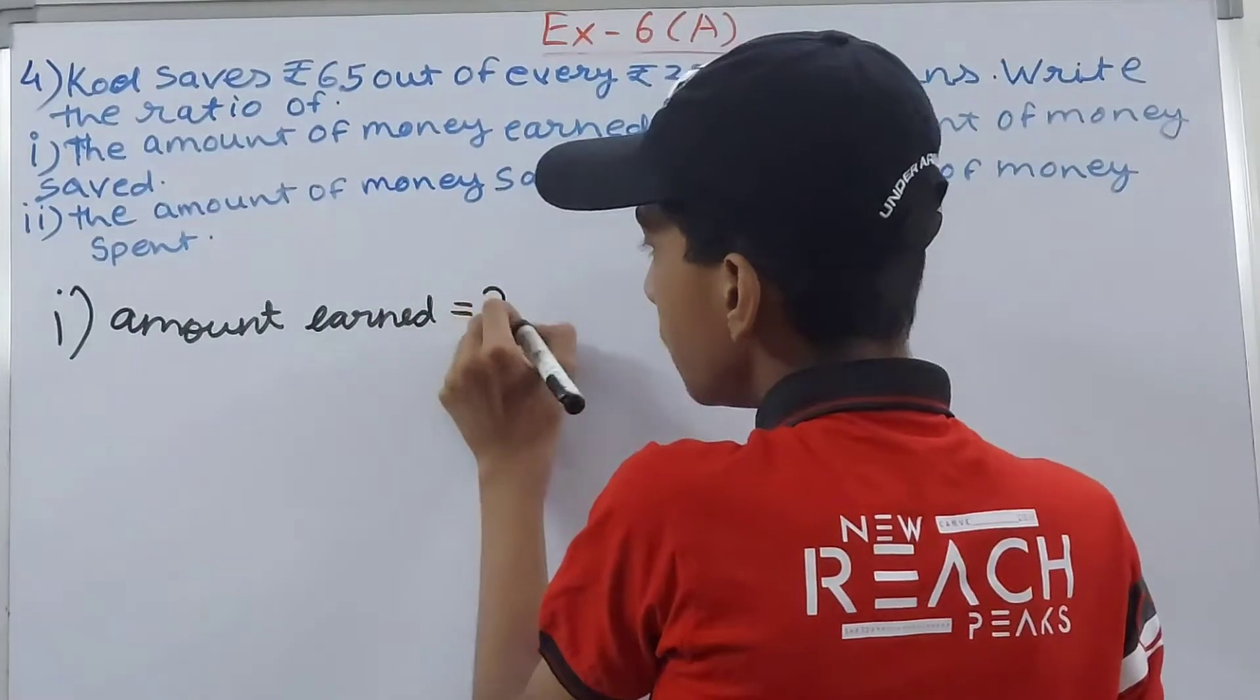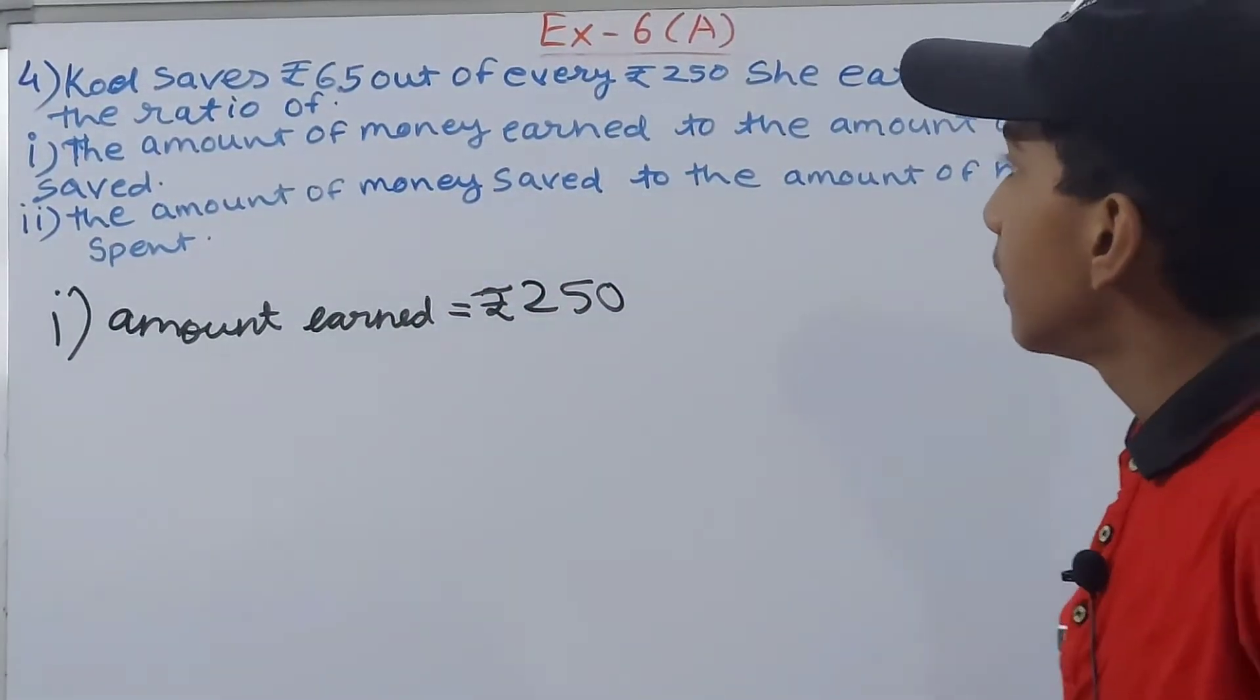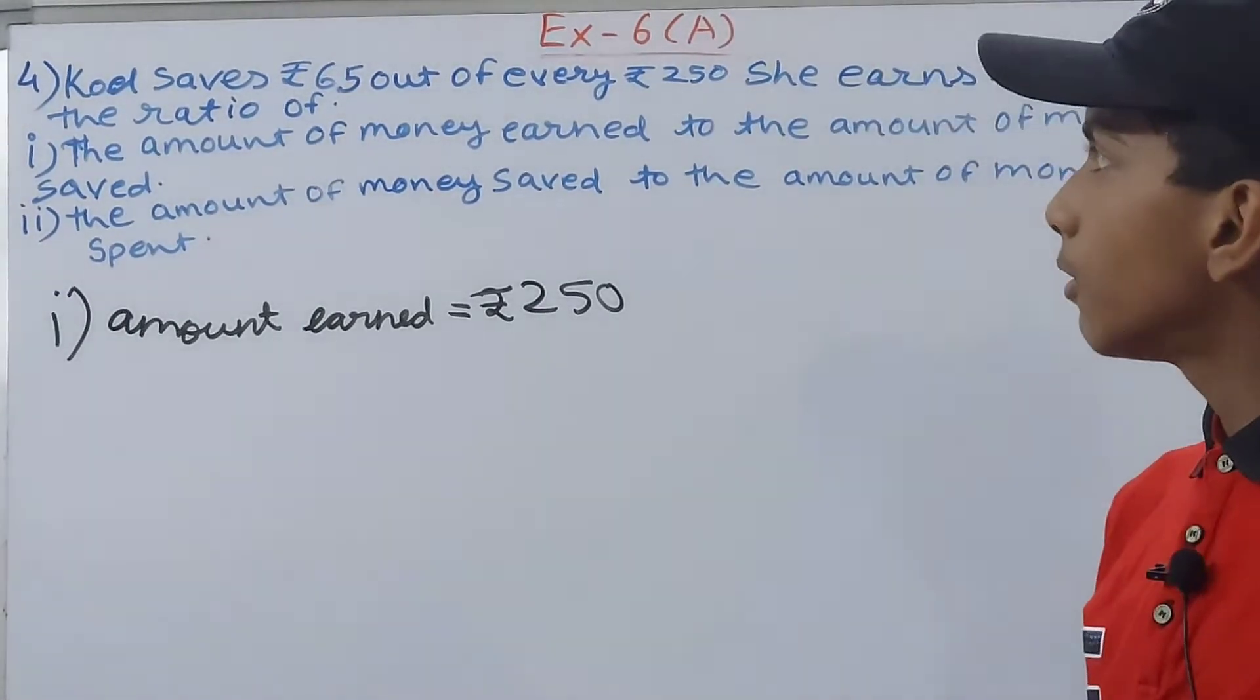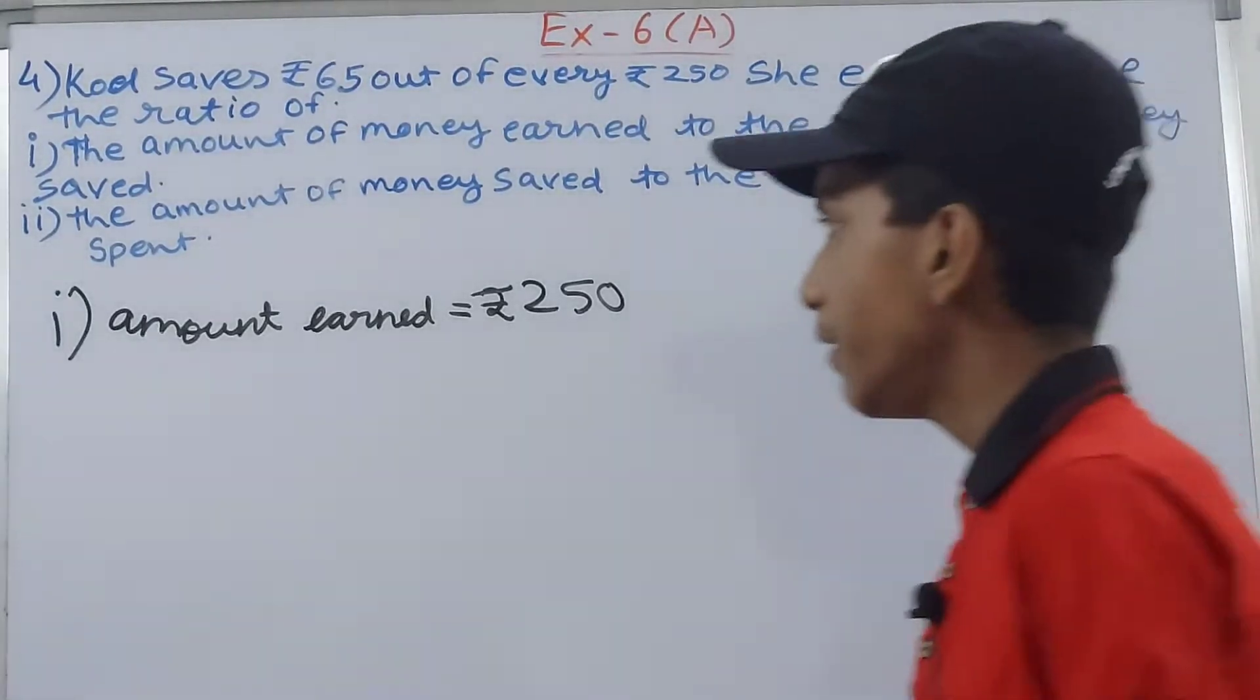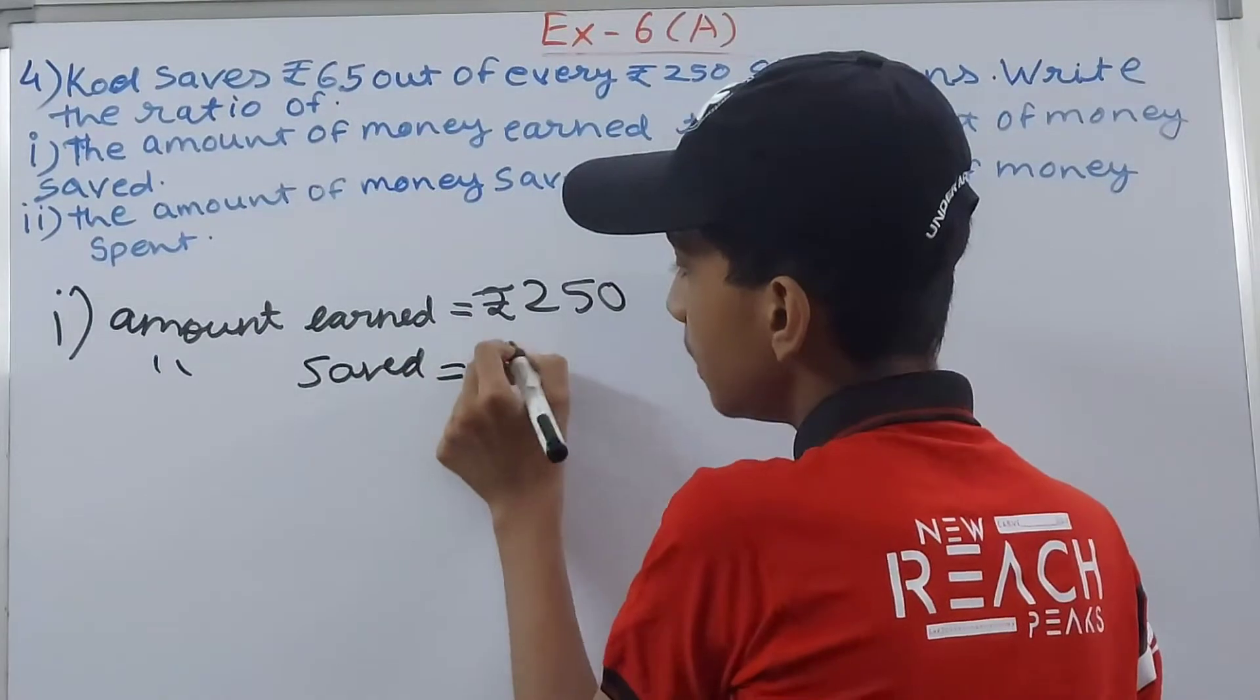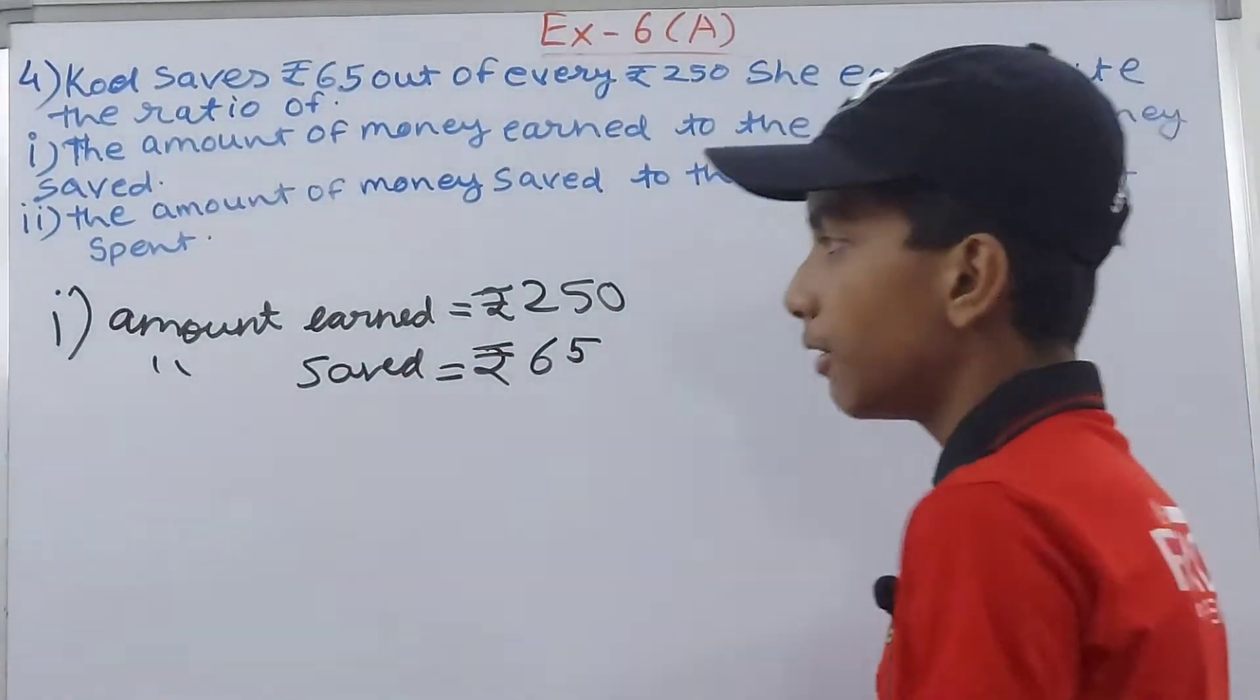This is amount earned. Now we have to find the amount of money saved, so amount saved is rupees 65. Now we can make the ratio here.